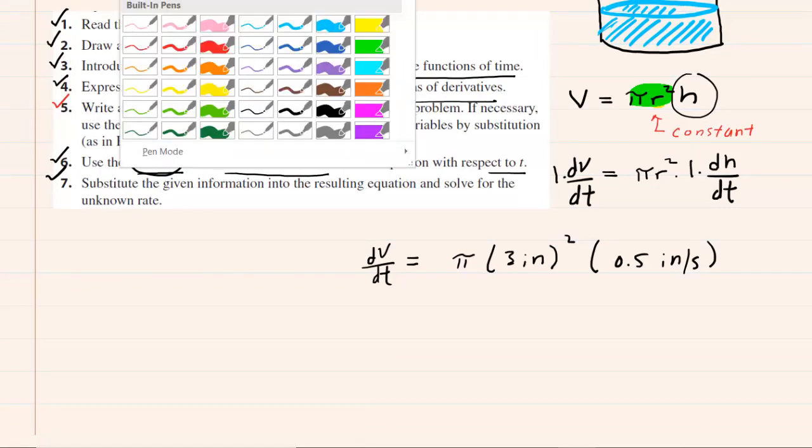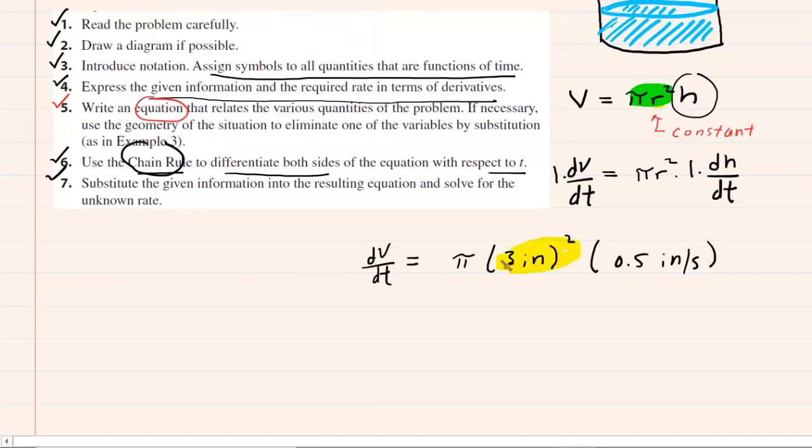Now if we want to leave our answer in terms of pi, we would pick up our calculator and do three squared times 0.5. So basically that's nine times 0.5. That's going to be 4.5.